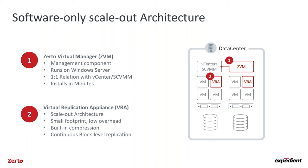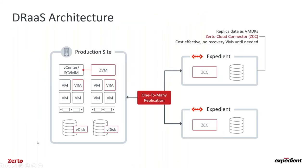You install the VRA on each and every hypervisor host, which is how we scale across large and small environments. In a DR-as-a-Service solution, the same ZVM and VRA components also run on the Expedient environment, but that's not visible to you — it's managed by Expedient. All you have is what we call a Zerto Cloud Connector, which is your endpoint to Expedient. It provides resource masking and security benefits.